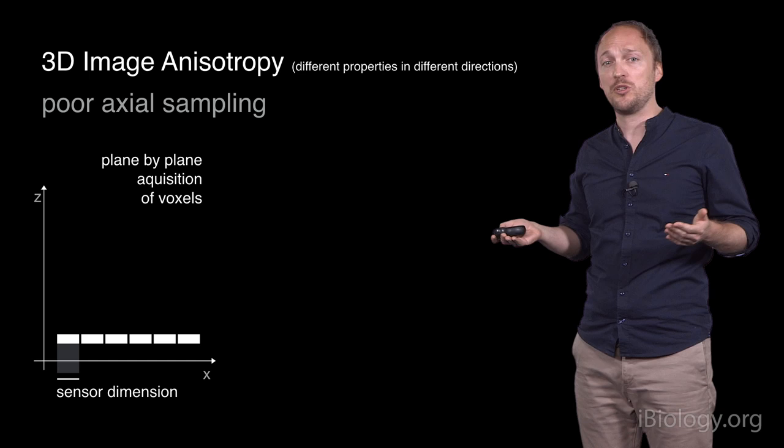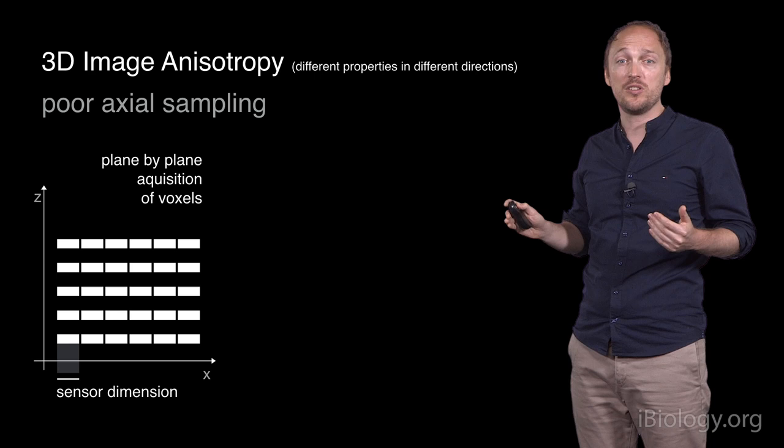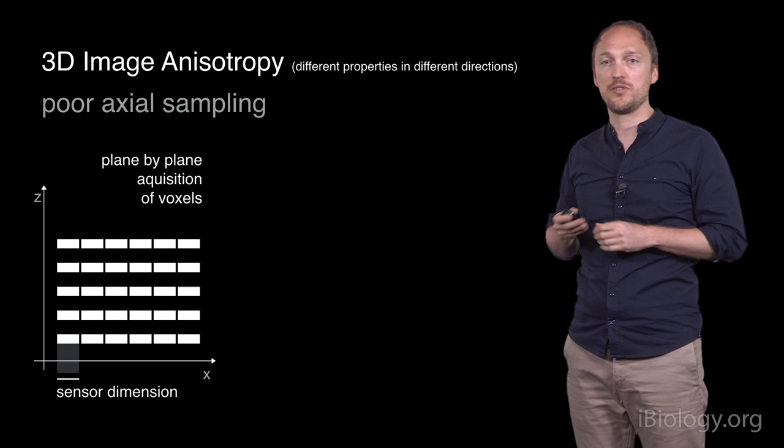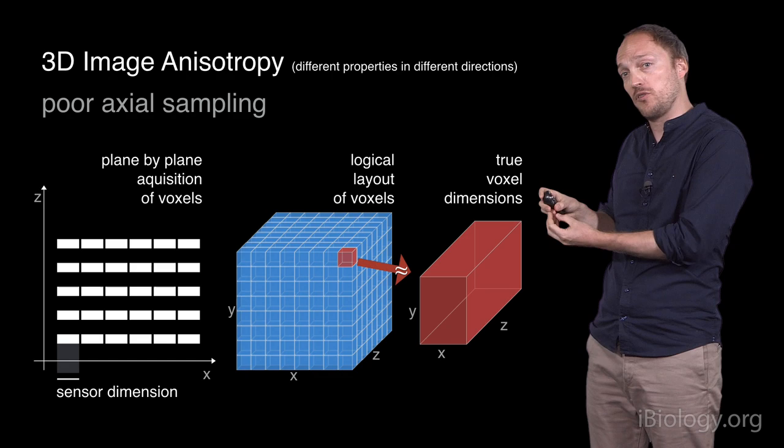Another issue in 3D volumetric imaging is that of the anisotropic nature of acquired 3D images. Most microscopes acquire the data plane by plane. Unfortunately, it's not practical to have as many planes as we have pixels on a single 2D image. And so, while the logical layout of pixels is as shown here, the true shape of a voxel, in truth, is elongated along the z-axis, so it's more like a brick.